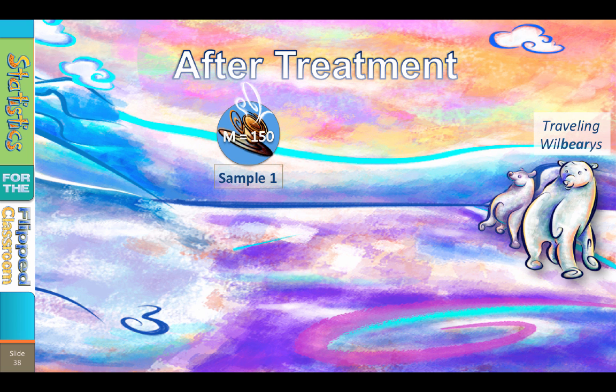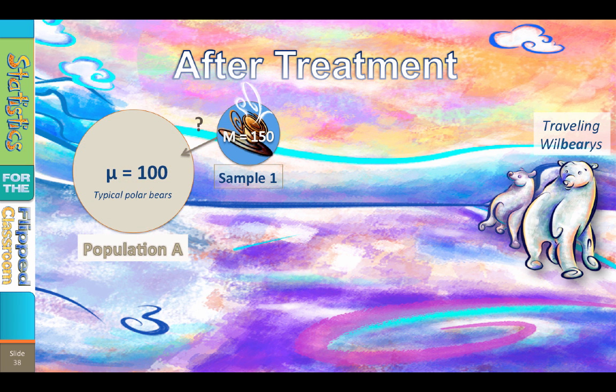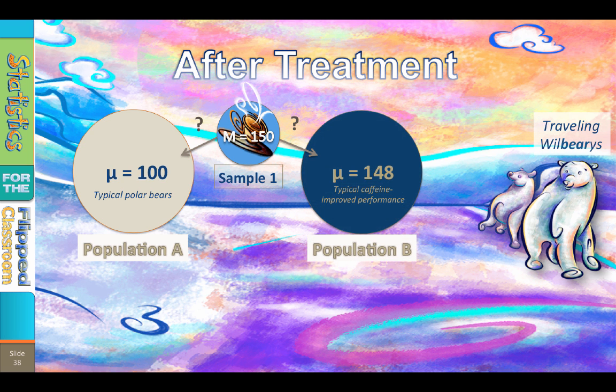Here are my options for explaining the traveling bears. First, the sample mean for the experimental group of 150 could still represent the population mean of 100, but with a lot of random error. Second, the sample mean of 150 could represent a different population mean — the population mean we would expect with 48% caffeine-improved performance. That population mean would be 148, which is 48% of 100, with two points of random error.